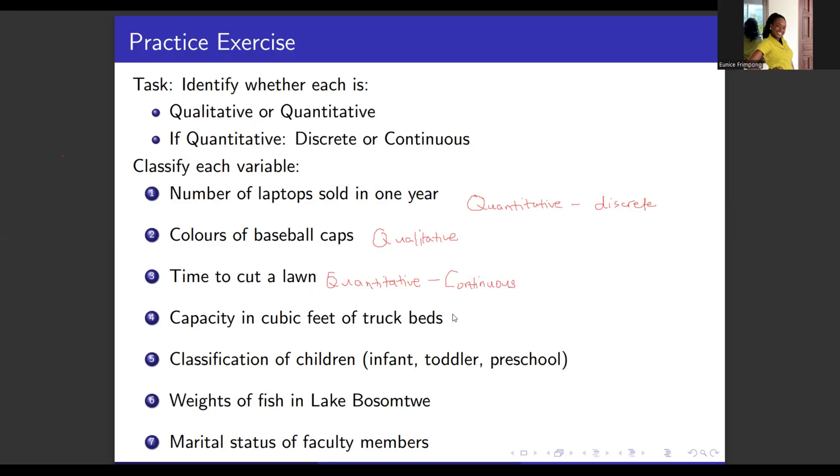The next one, capacity in cubic feet of track beds. Because we can use numbers to represent this, it is quantitative. But is it discrete or continuous? This is continuous because we cannot count, but we can measure. Next example, classification of children as infants, toddlers, or preschool. Because we are not using numbers but a description, this is qualitative. Weight of fish in Lake Bosomtwe. Weight, we can use numbers, so it is quantitative. If quantitative, is it discrete or continuous? We cannot count, but we can measure, so it is continuous.